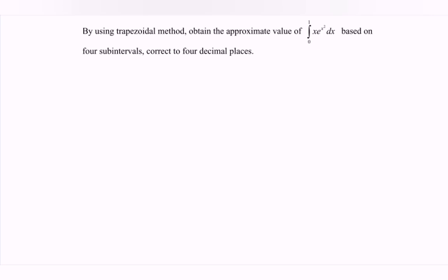By using the trapezoidal method, obtain the approximate value of the integral from 0 to 1 of x multiplied with the exponent x squared dx, based on 4 subintervals, correct to 4 decimal places.